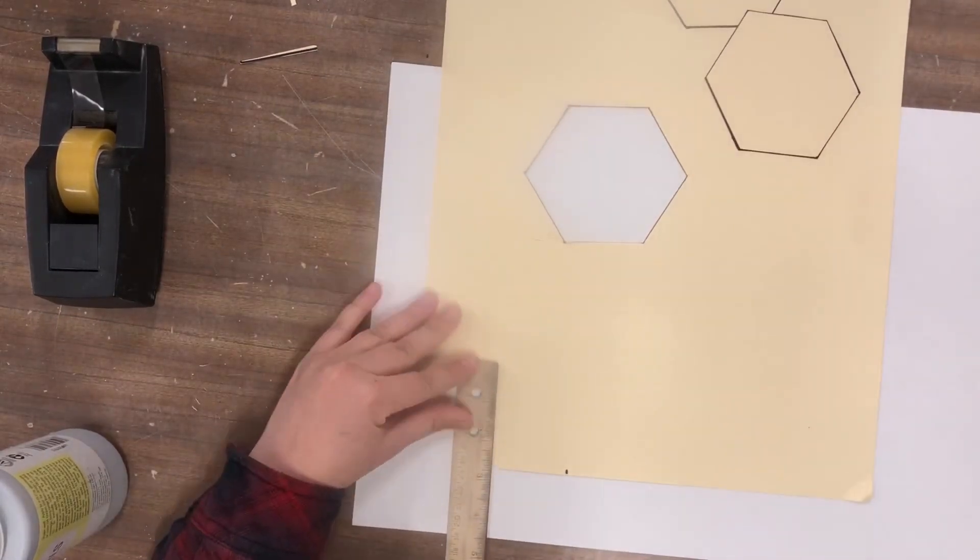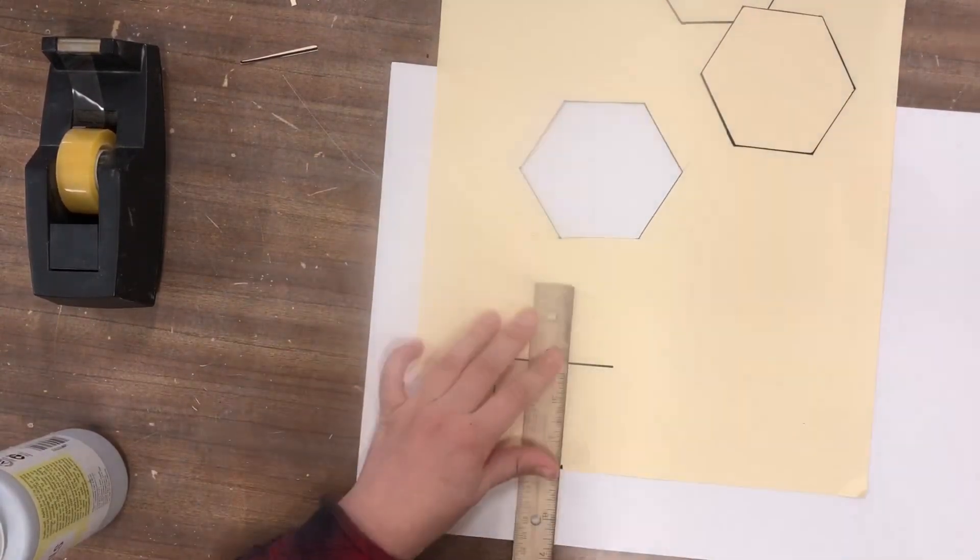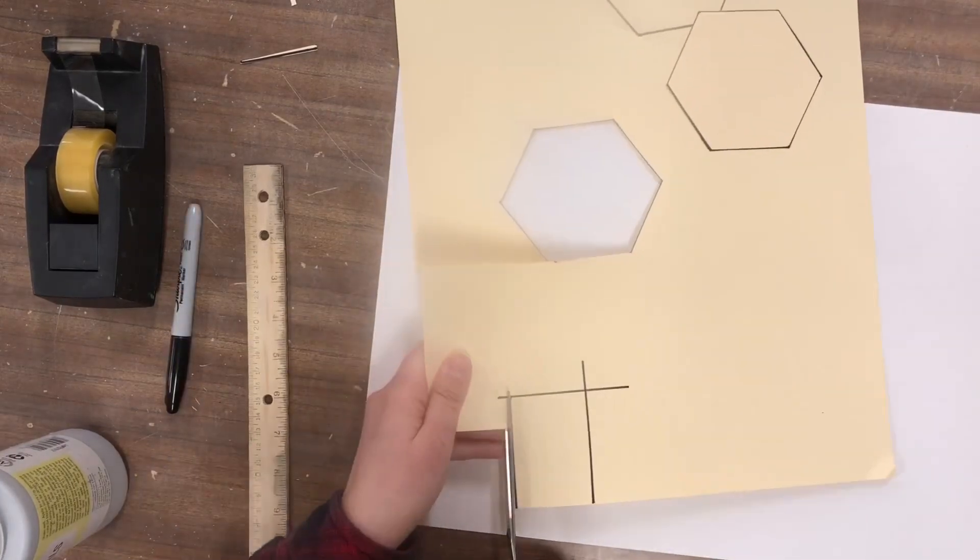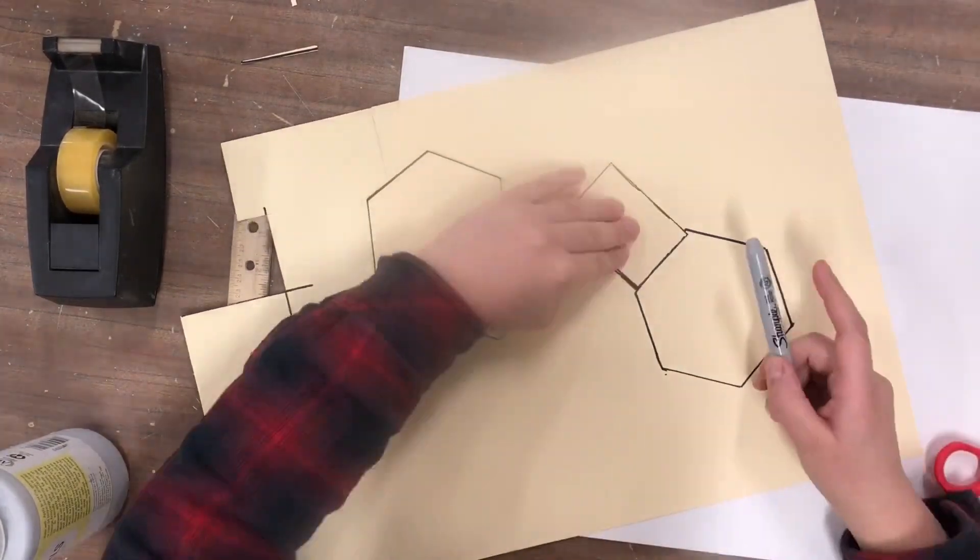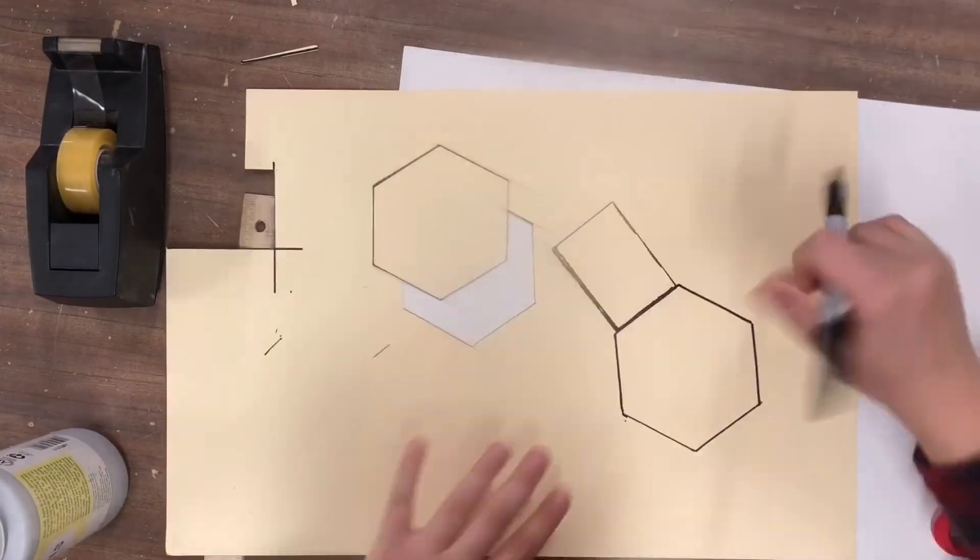Now create the walls of your prism. These are each created by a rectangular shape. For the size of your rectangle, one side should be equal to the length of your hexagon's wall and the other should be the desired height of your form.